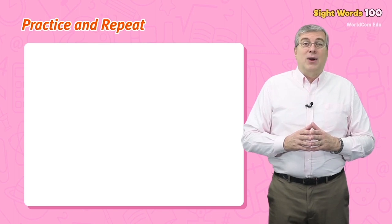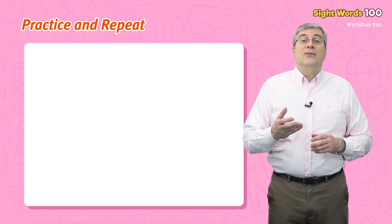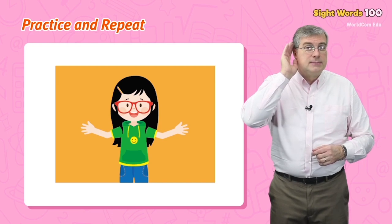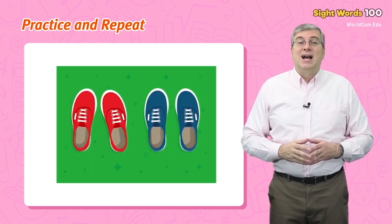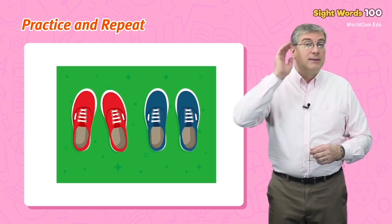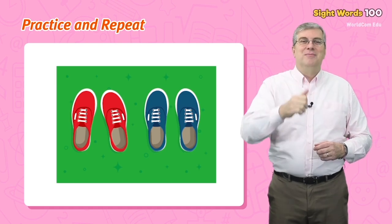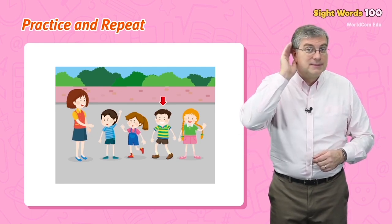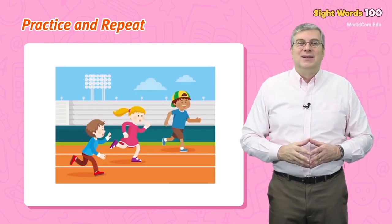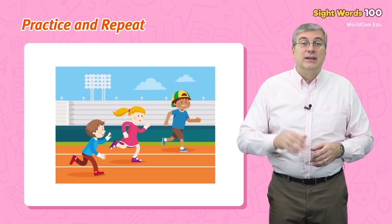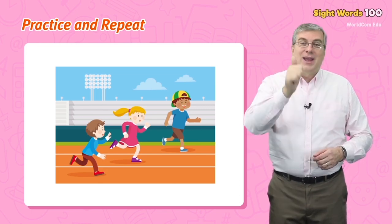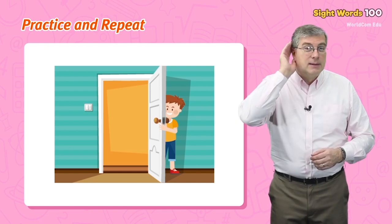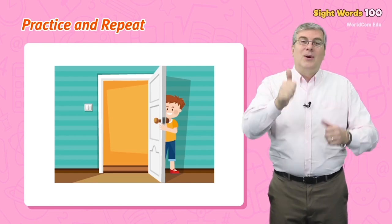Now it's time for practice and repeat. Repeat after me: arms — the girl opens her arms. Size — the shoes are the same size. Third — I am third in line. Race — the children are having a race. Person — a person is behind the door. Good job everybody!